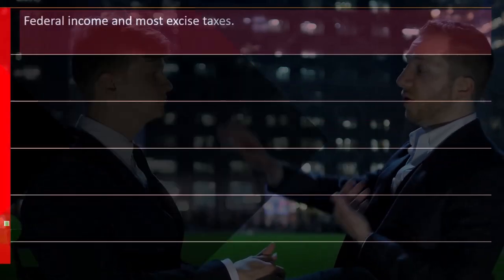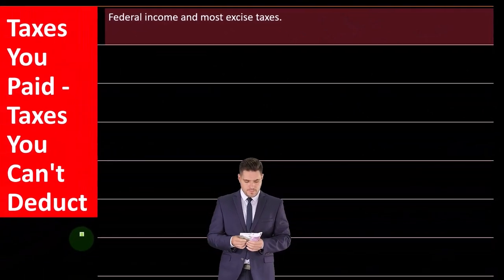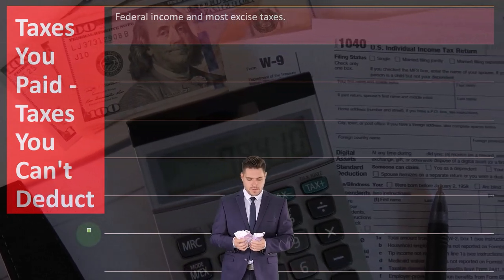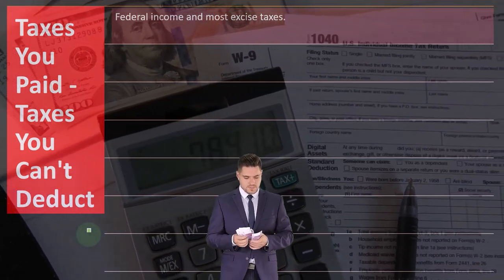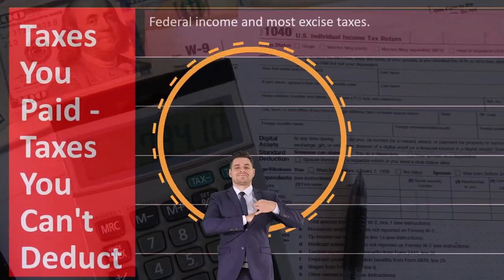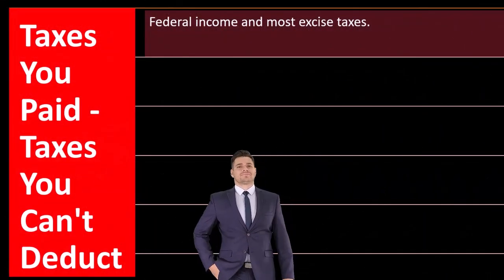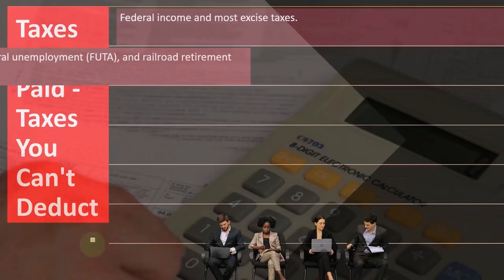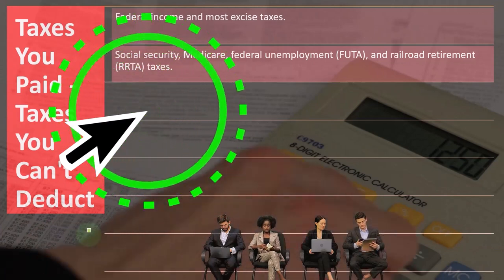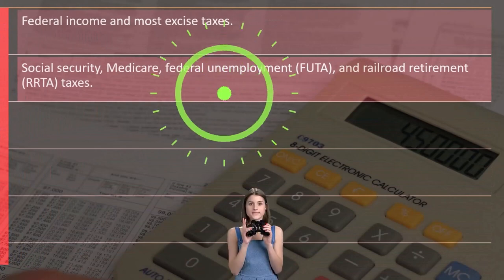So the question is: which taxes are deductible for federal income tax purposes? First, let's talk about the ones you cannot deduct. The federal income tax itself, of course, you cannot deduct because that would be a circular reference — we're in the process of calculating it. Also, most excise taxes. Then you have social security, Medicare, federal unemployment (FUTA) — these are the payroll taxes. You can't deduct payroll taxes for federal income tax purposes, and the same goes for railroad retirement (RRTA).